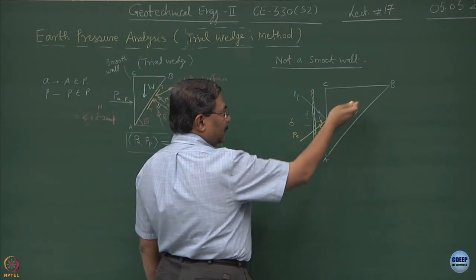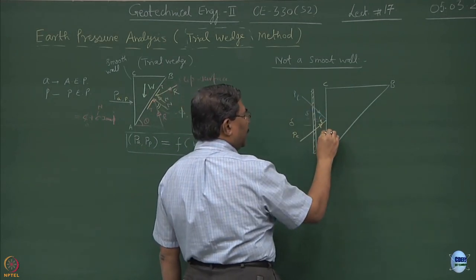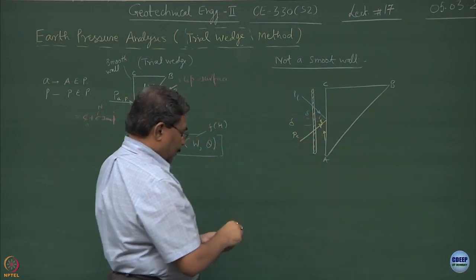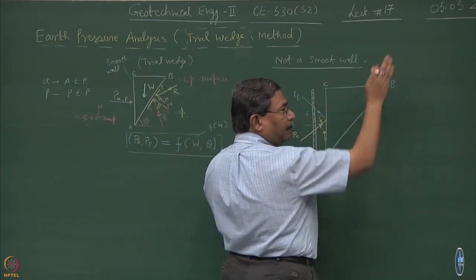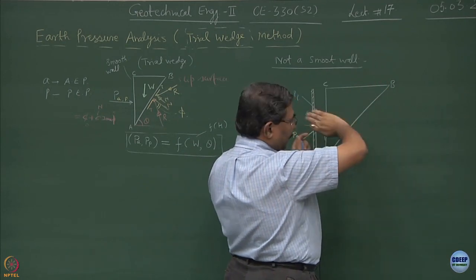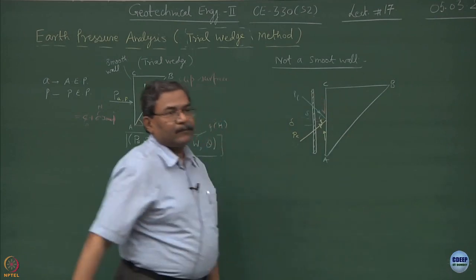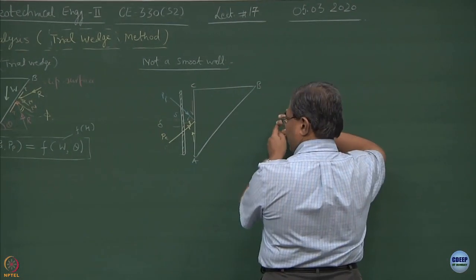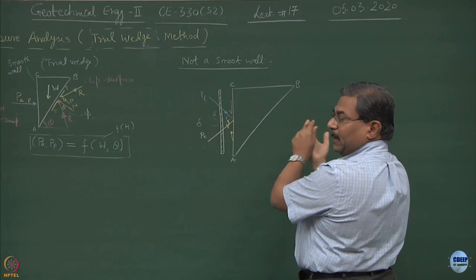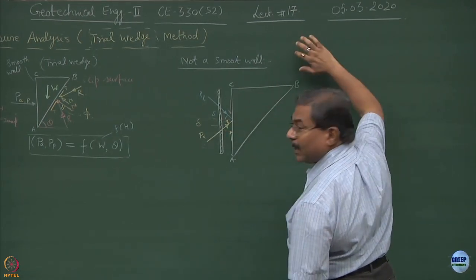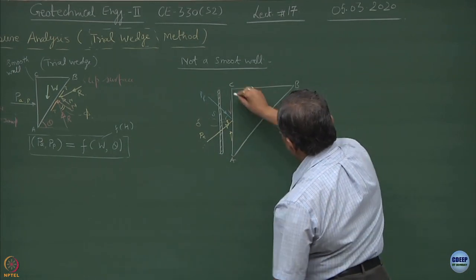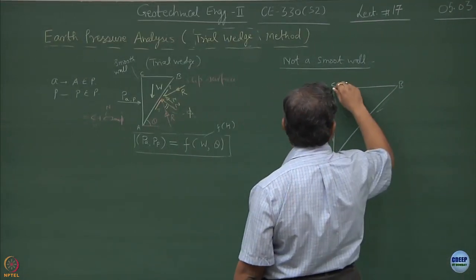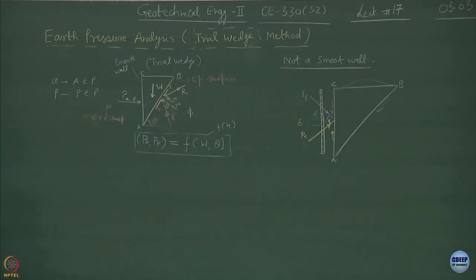If the wall is in the active state, this block is moving down, the friction is going to be upwards, and hence you have a normal component, a shear component, and the resultant is PA. In case of passive earth pressure condition, the block is moving up into the backfill, the shear stress is going to be acting in the opposite direction. In the passive situation, the wall is pushing the block inside, so the tendency of the block is to move up and slide. The reaction on this is going to be like this — this is how the shear stress is mobilized. The hump formation is a peculiar characteristic of the passive earth pressure.